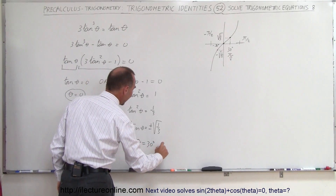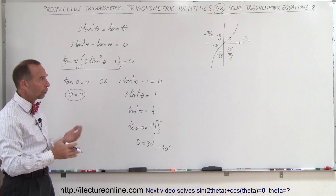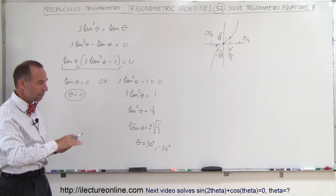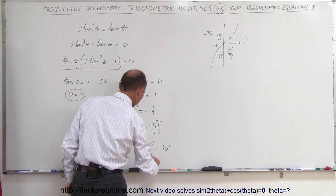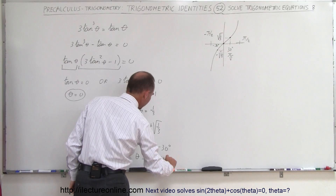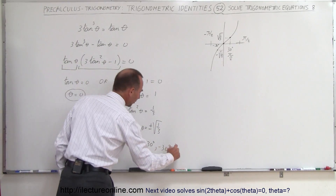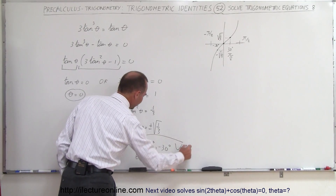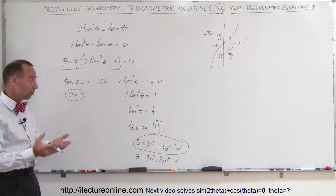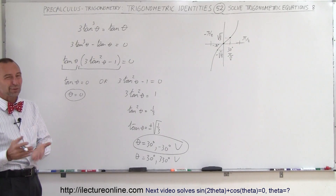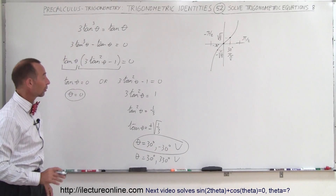So theta can also be negative 30 degrees. If you prefer values between 0 and 360 degrees, you could say theta equals 30 degrees and 330 degrees. I prefer expressing it as ±30° since it's easier to discuss tangent values in the range of −π/2 to +π/2. So there are three possible values that satisfy this equation.